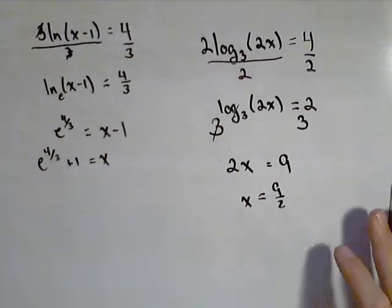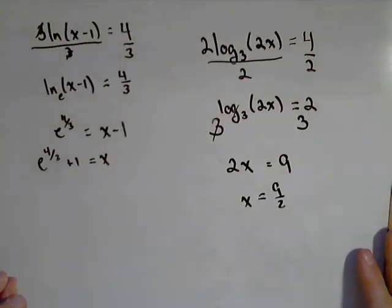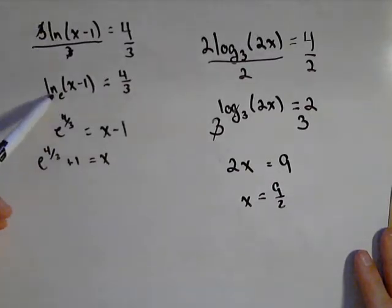So those are two different ways we can think of solving a logarithmic equation. The one thing that's always necessary is to isolate the logarithmic piece. And the next part is to make sure you know what base your log is, because that's going to be the base of your exponential.